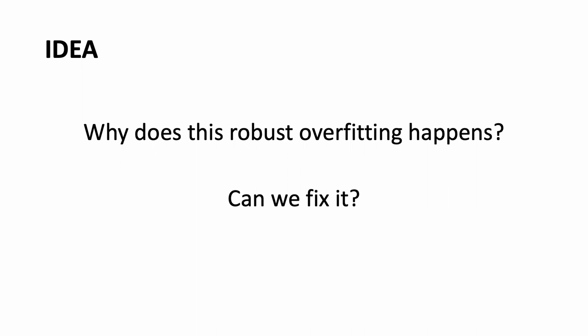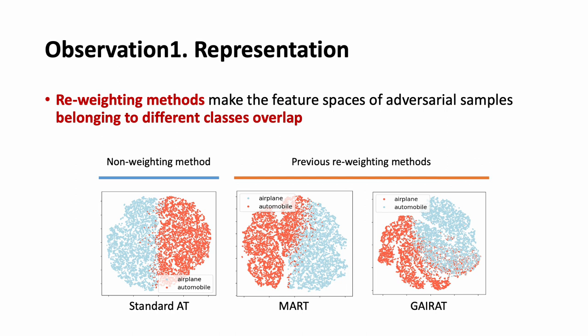We were curious as to why this robust overfitting occurs in every reweighting method and whether it could be fixed. To find an answer, we first analyzed the visual representation of standard adversarial methods and reweighting methods. We found that reweighting methods result in the feature spaces of adversarial samples belonging to different classes becoming more largely overlapped. Additionally, if the model is more vulnerable to logic scaling attack or auto attacks, the overlap is even greater.